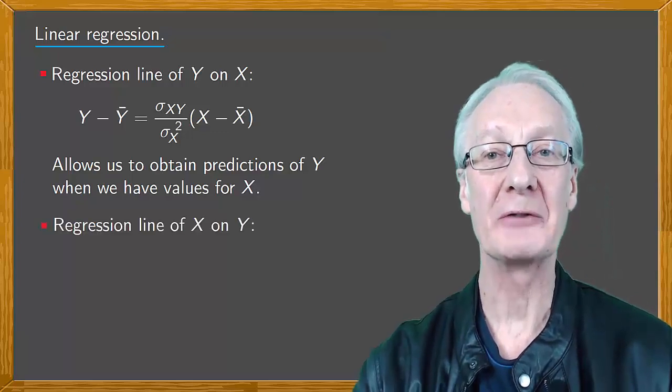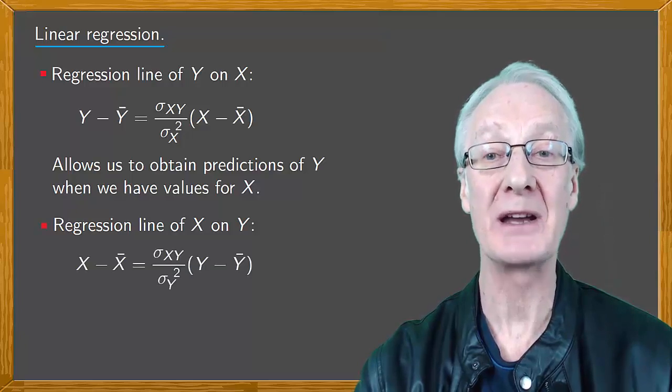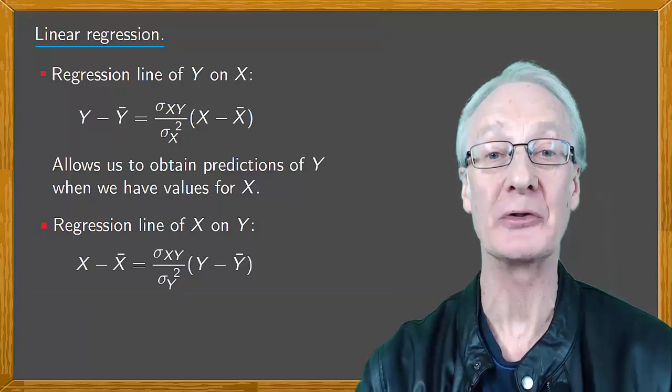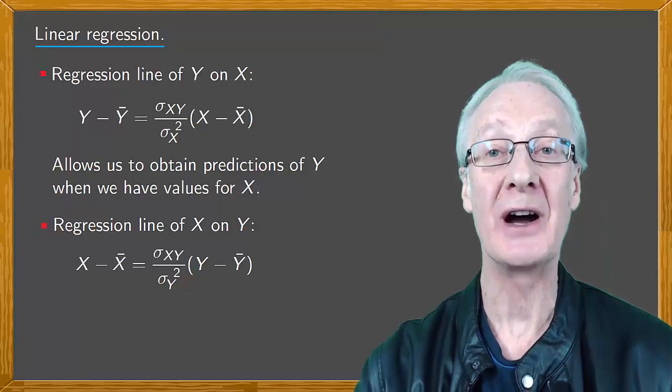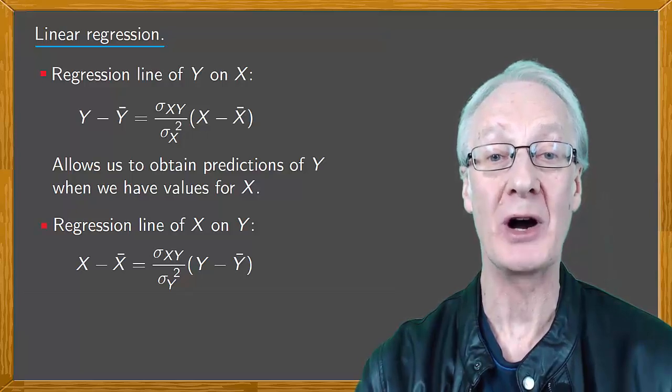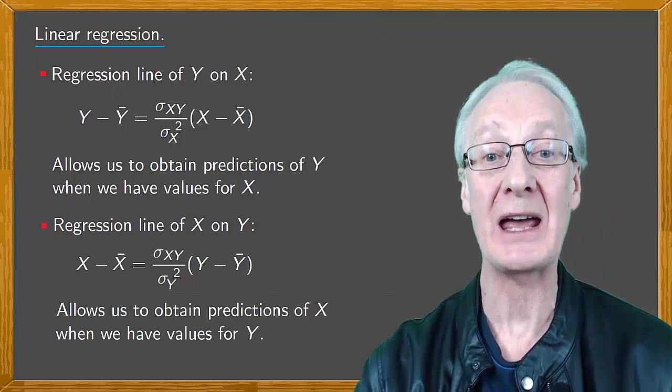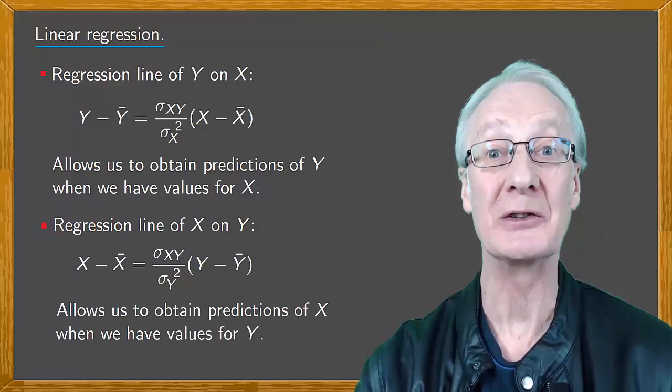There's also the regression line of X on Y, defined by X minus the mean of X equals the covariance sigma XY divided by the variance of Y, sigma Y squared, times Y minus the mean of Y. And we can use this to get predictions of X when we have known values of Y.